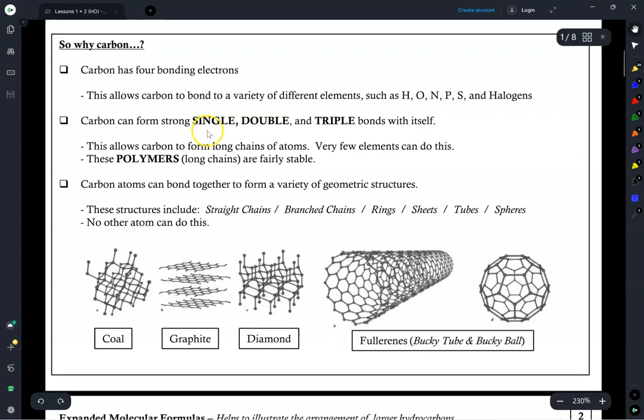Next, carbon can form strong single, double, and triple bonds, not just with other substances, but also with itself. This allows carbon to form long chains of atoms, called polymers, that are very stable, and very few elements can do this.